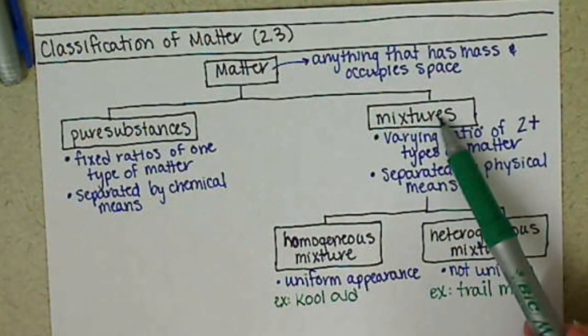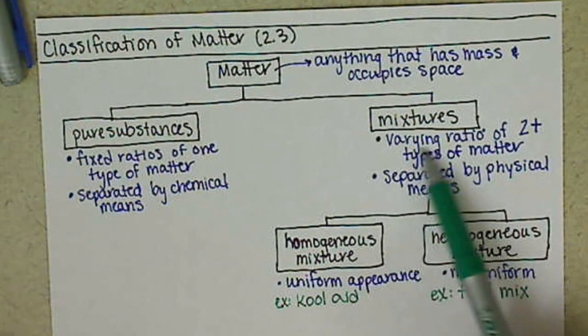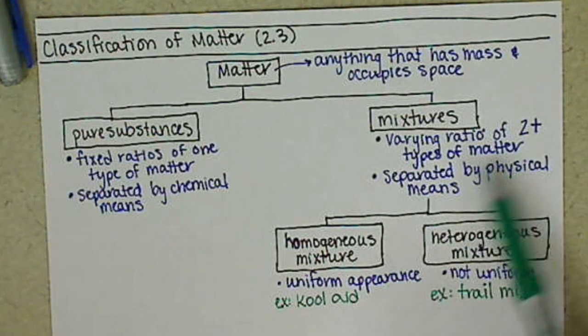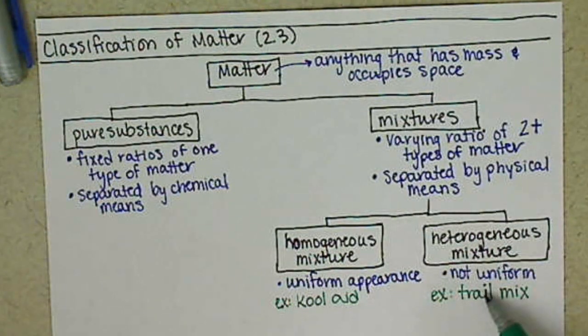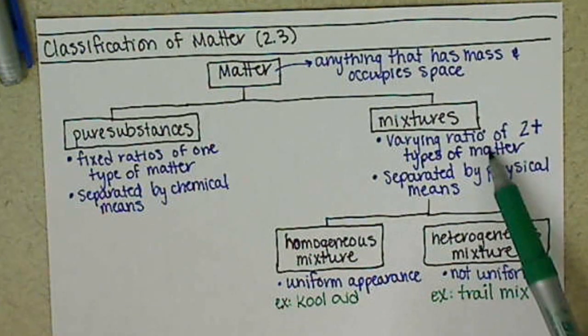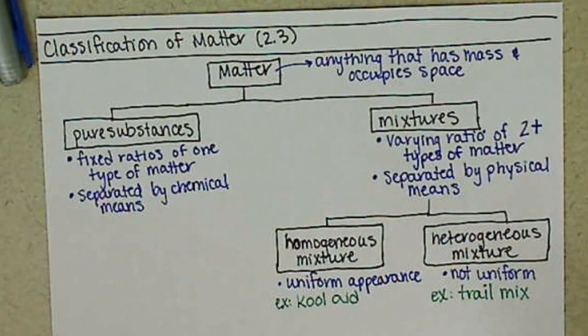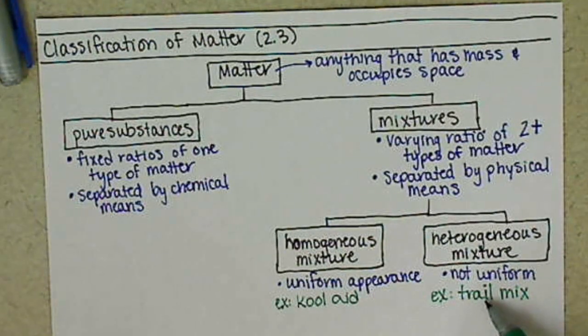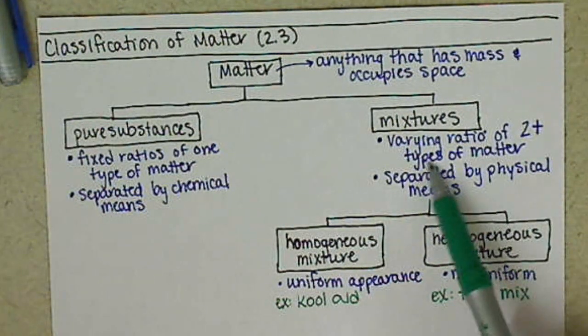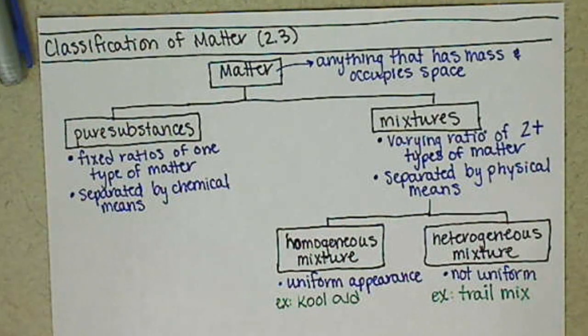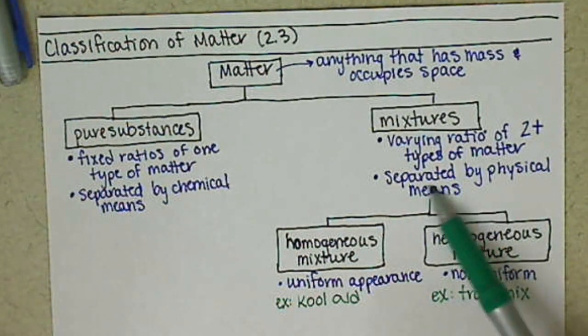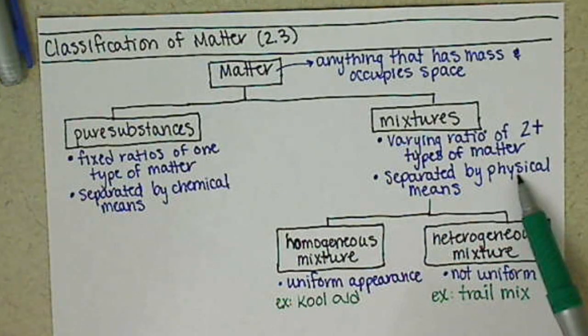Now what makes them mixtures is that they have this varying ratio of two or more types of matter. So for the trail mix, this is easiest to think about, it has different components. You have peanuts, you have raisins, chocolate, whatever else you like to have in your trail mix. It has different types of matter. The other thing that makes those both mixtures is that they can be separated by physical means.